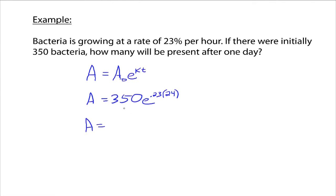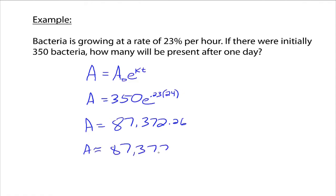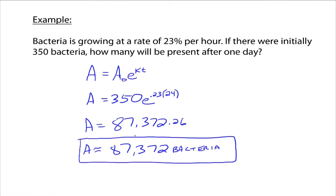You bring out your calculator and compute 350 times E to the 0.23 times 24, and you get approximately 87,372. So after one day, we've grown from 350 bacteria to about 87,372. That thing's going pretty fast!